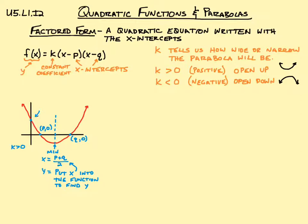The last thing we can find is the y-intercept, which is when x is zero — x is always zero for the y-intercept. If we put zero into the function, f of zero gives us the y value for that intercept. So f of zero means zero is our x value, and we calculate the whole function with zero for x to find our y. We could write this notation for any point, including the minimum point.